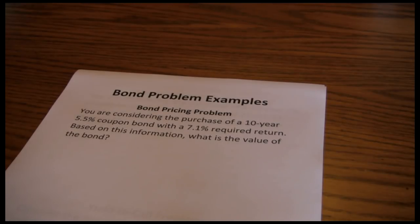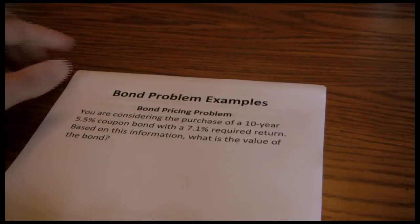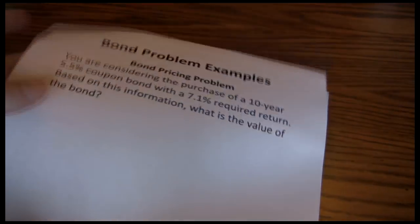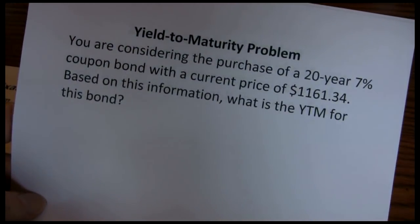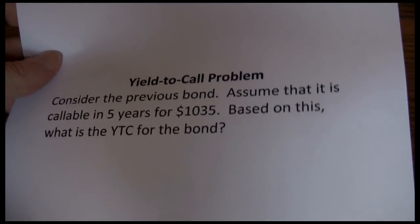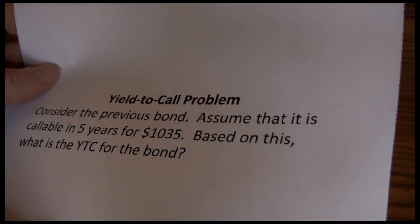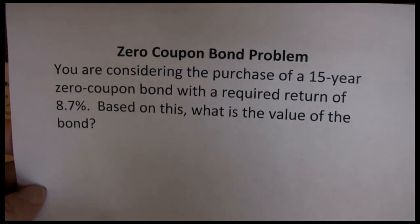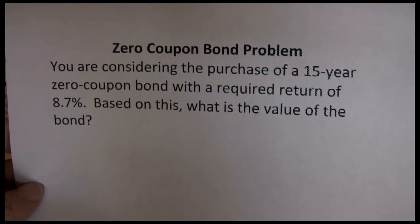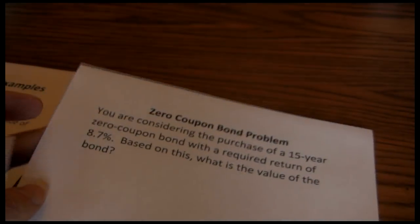There are four basic bond pricing problems we're going to encounter. The first is pricing of an ordinary bond. Next we have yield to maturity and yield to call situations for an ordinary bond. And then we'll introduce the idea of a zero coupon bond and walk through the calculation of bond pricing with a zero coupon bond.